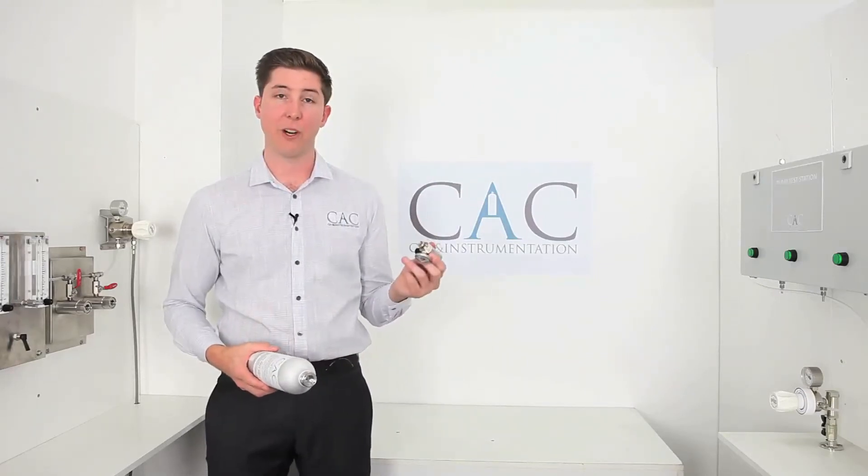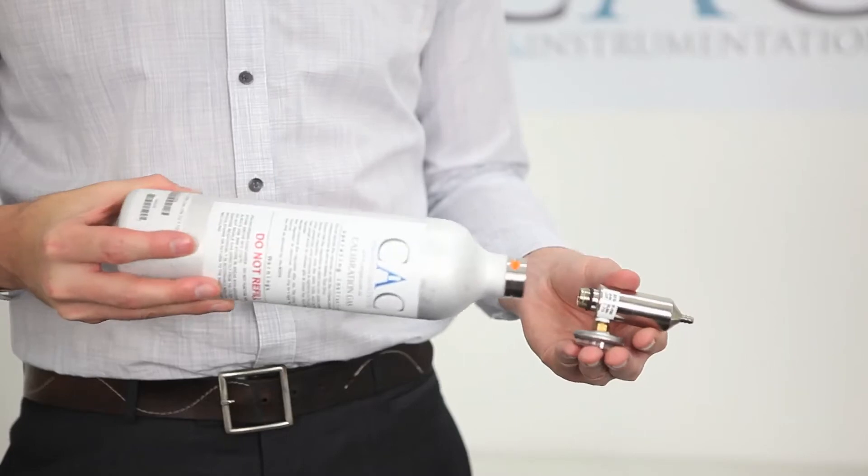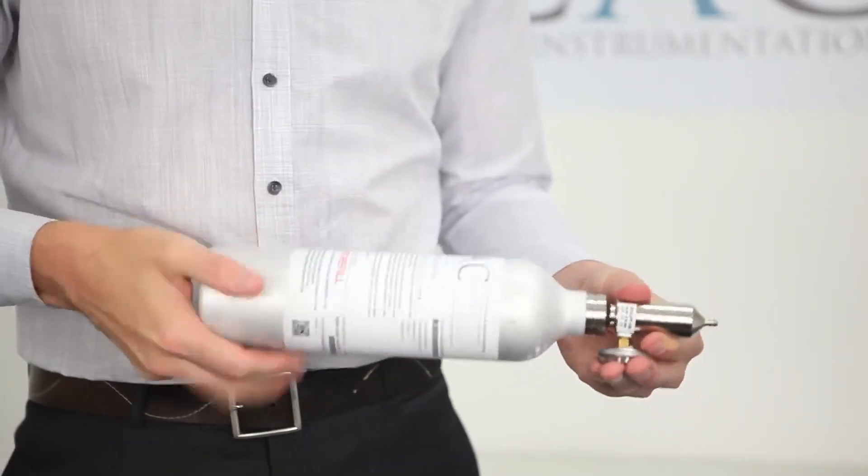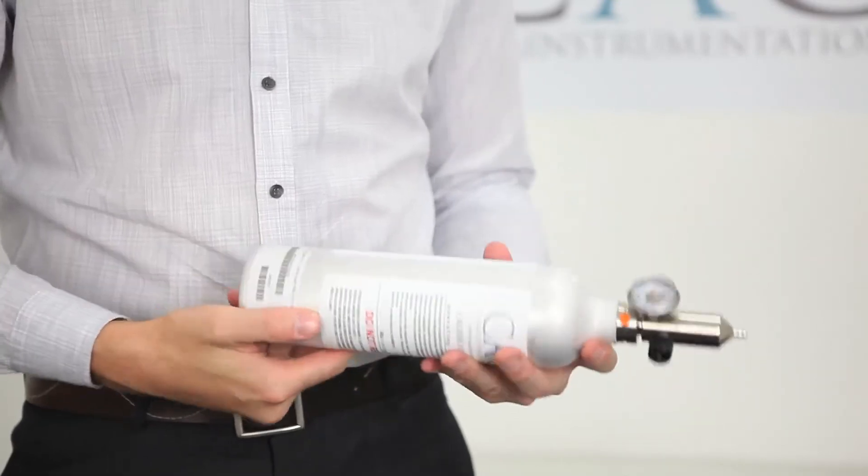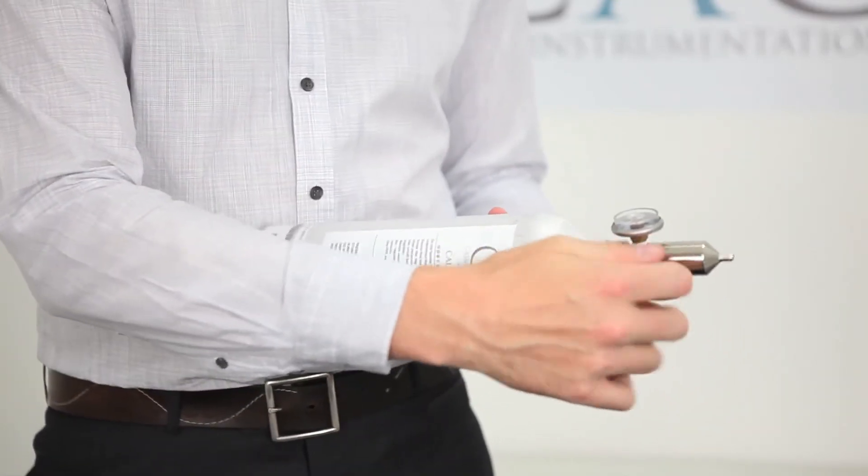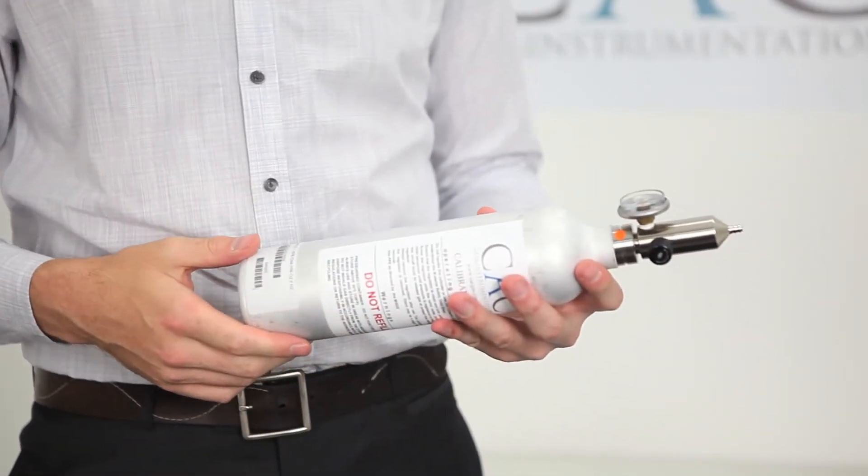Next, simply line up the thread of the regulator to the valve of the cylinder and twist the cylinder clockwise until you hear the gas start to flow. Then you can shut off the valve and your cylinder is ready to use.